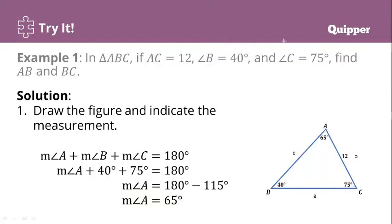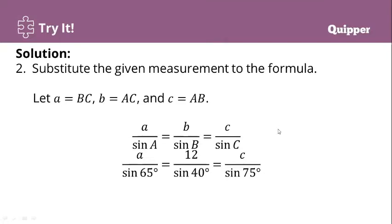Now, considering that we have complete values for our angles, we can now solve for the measurement of the sides b and c. Using the formula, we let a be equal to side BC, b be AC, and c be side AB. Just write the formula and then substitute the given values. From there, we can solve for a or c.